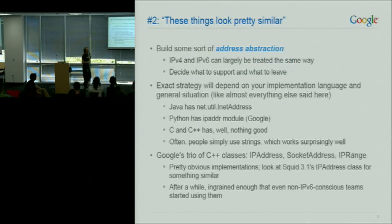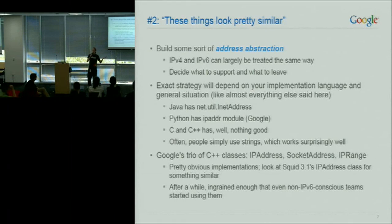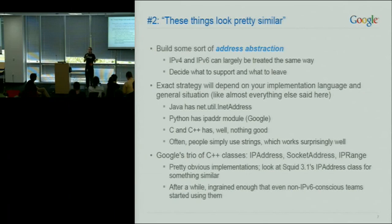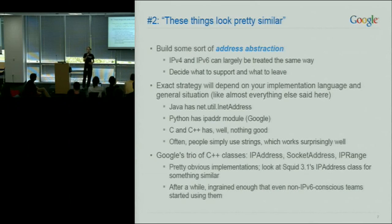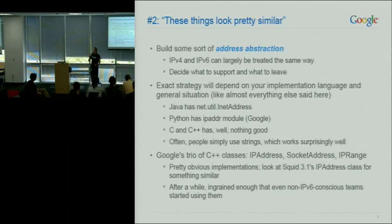The other approach, which is probably what most people will be doing, is building some sort of address abstraction. This depends on language — I'm talking about C++ here; for Python or PHP it's a different game. An address abstraction is simply some object that represents an IP address, whether IPv4 or IPv6. You can deal with them the same way — they have the same kinds of operations.